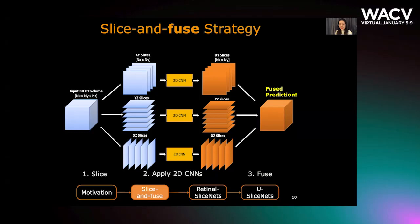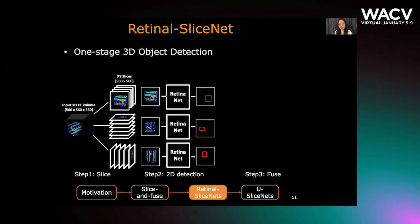We present two SliceNet variants for 3D object detection and segmentation. The first is Retinal SliceNet, a one-stage object detector. It predicts 3D bounding boxes by directly following the slice-and-fuse approach. RetinaNet is applied to images to predict 2D bounding boxes, and in the fusion stage, it finds the intersection of bounding boxes to obtain the final 3D bounding box.